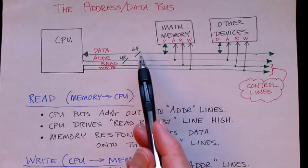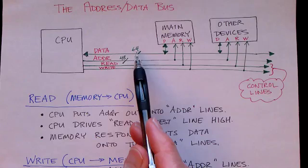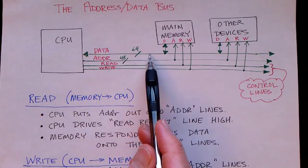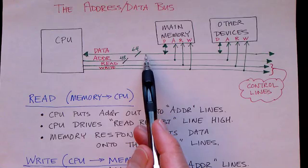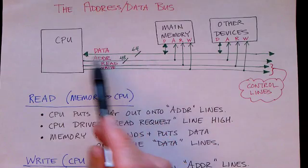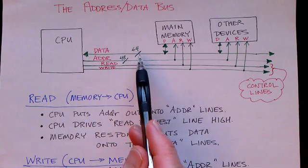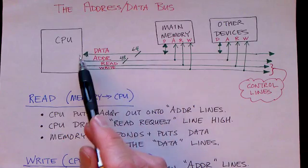This symbol here with a little slash and a number indicates that this line represents not just a single wire but 64 parallel wires. So the idea here is that 64 bits can be transferred between the CPU and the main memory.